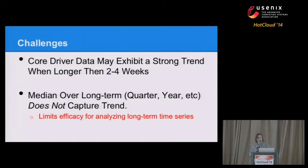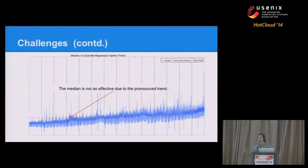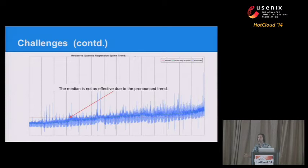Once we started talking about this with other teams, they expressed interest in doing historical anomaly detection — looking at a year's worth of data and tagging all the anomalies with timestamps and what the values should have been. But this became problematic because our idea of using the median as a baseline doesn't work well over a year. Over a year there's clearly a trend we want to track, and putting a straight line over it is not effective. We needed a way to track the trend while still representing normal behavior.